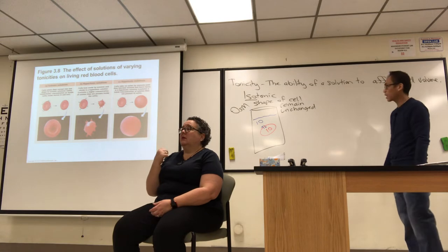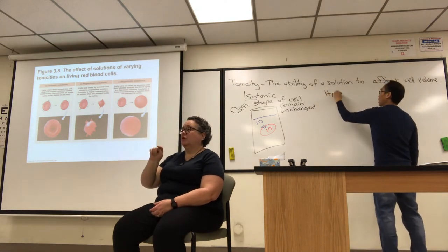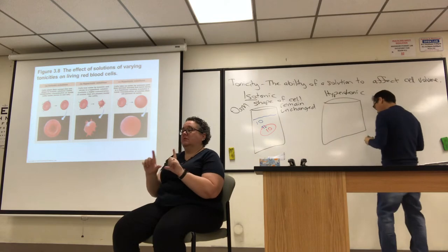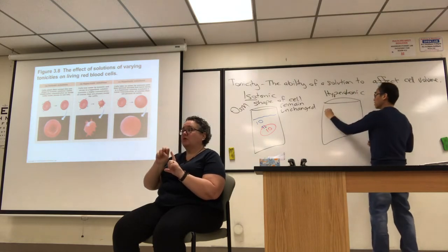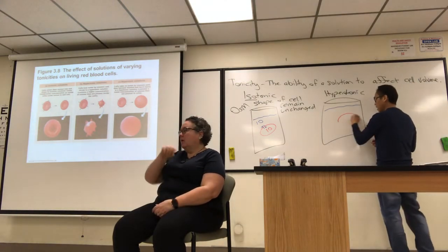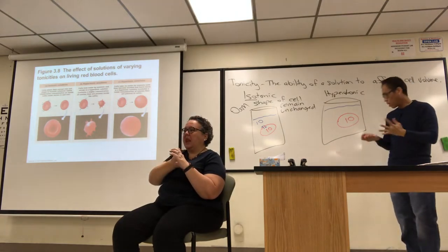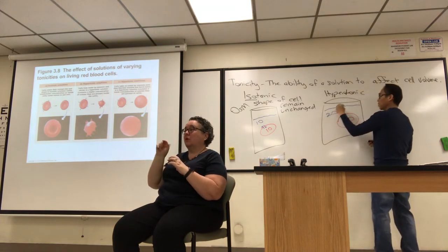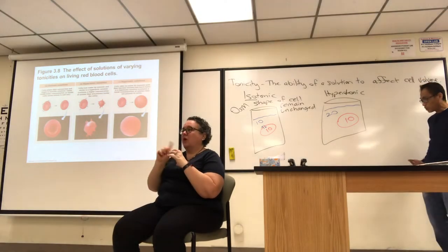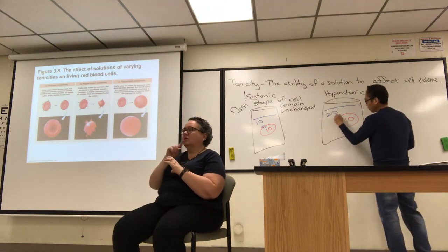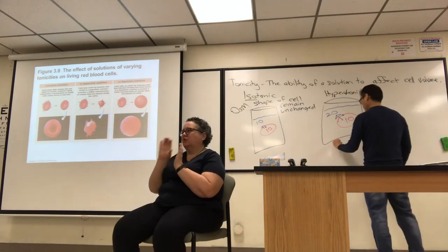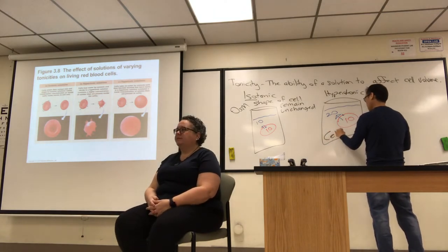The middle frame shows a hypertonic solution. Hyper means more — greater than. If the cell has a concentration of 10 and the solution is saltier, say 20, water goes to where the most stuff is. There will be more water leaving the cell than entering, so there's a net movement of fluid out. The cell will shrink.